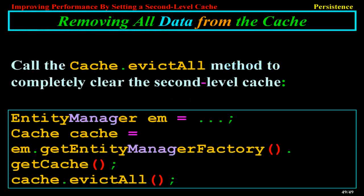Removing All Data from the Cache. Call the Cache.evictAll method to completely clear the second-level cache: EntityManager m = ...; Cache cache = m.getEntityManagerFactory().getCache(); cache.evictAll().